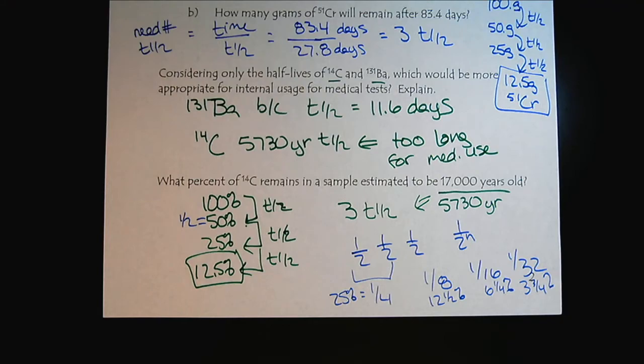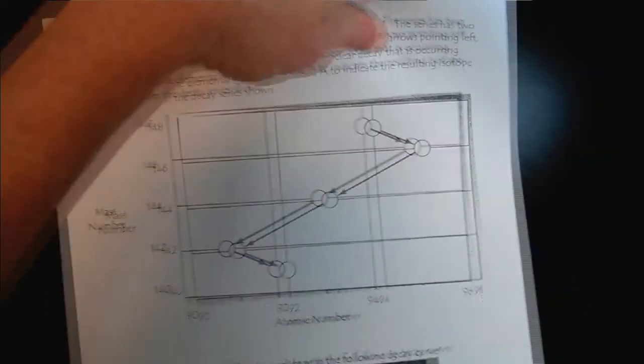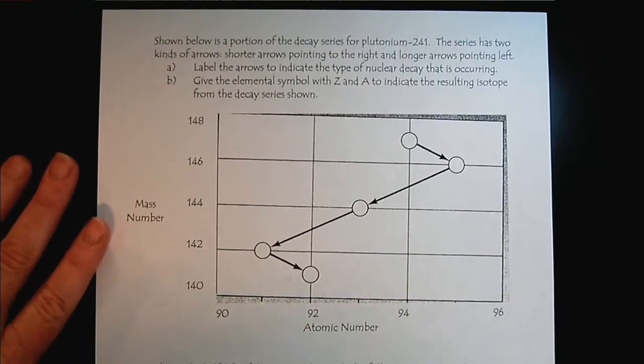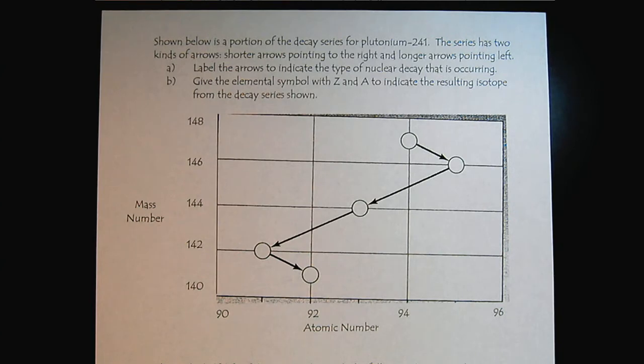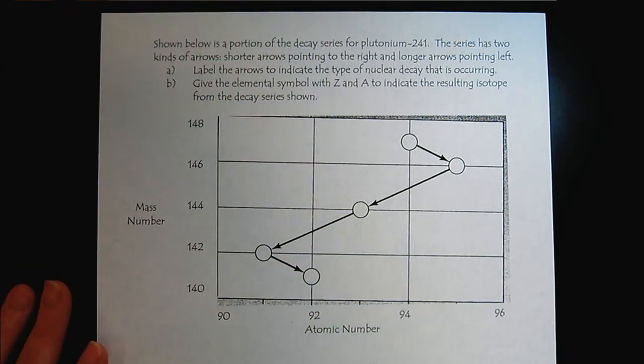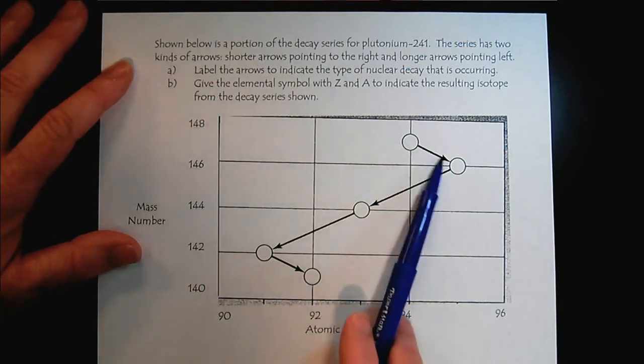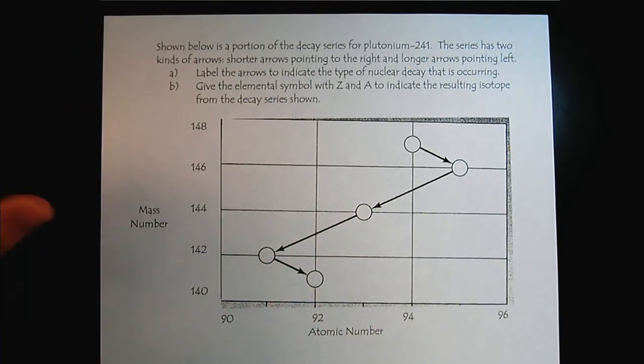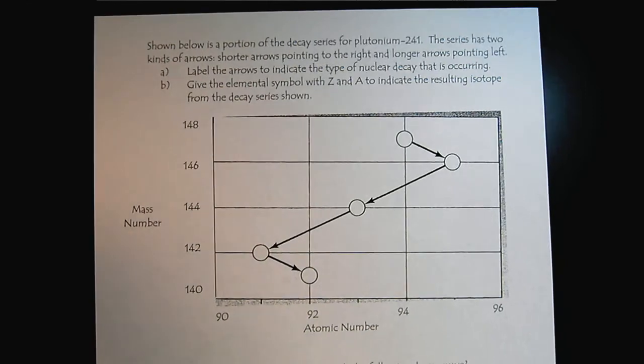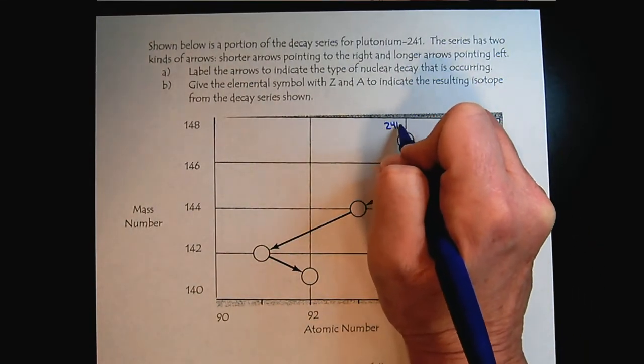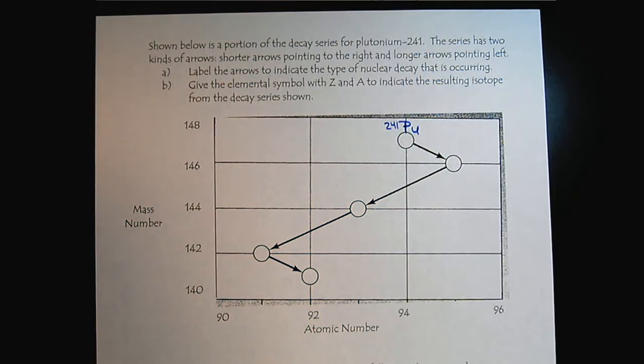Now let's look at the last page here for this part of the series. Shown below is a portion of a decay series for plutonium 241. The series has two kinds of arrows, shorter arrows pointing to the right, longer arrows pointing to the left. Label the arrows to indicate the type of nuclear decay that is occurring. And then give the elemental symbol for Z and A to indicate the resulting isotope of the decay series. So where did we start? We started at plutonium 241.